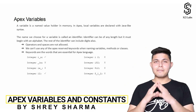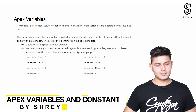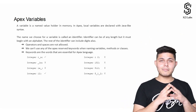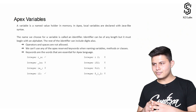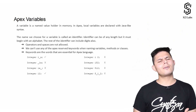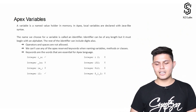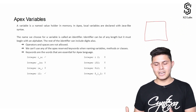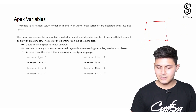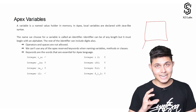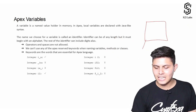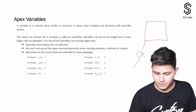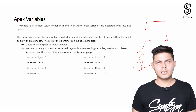Let's understand what exactly Apex variables are, how they differ from other programming languages, and what you need to take care of while writing an Apex variable. A variable in any programming language is a named value holder — there is a place where you can store data and you assign it a name, like 'a' or 'shrey', whatever you want.